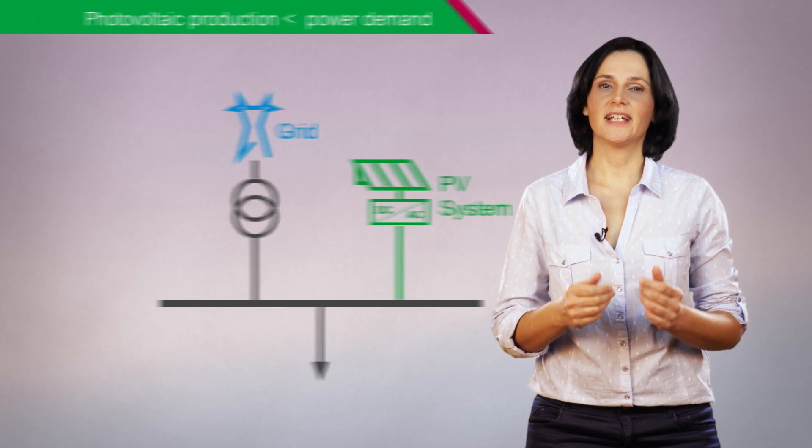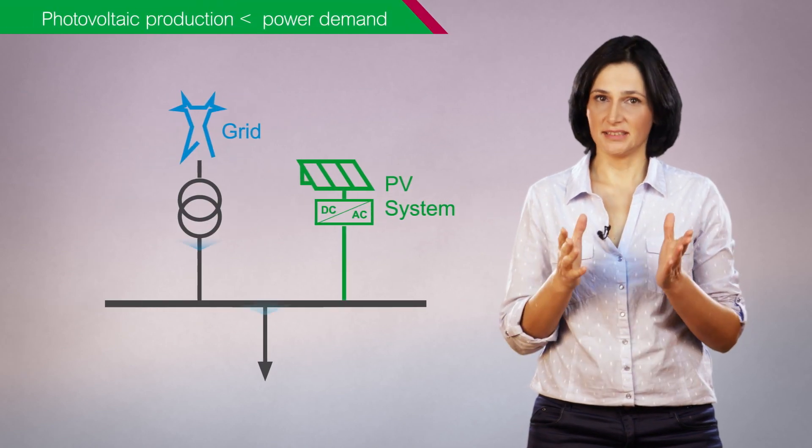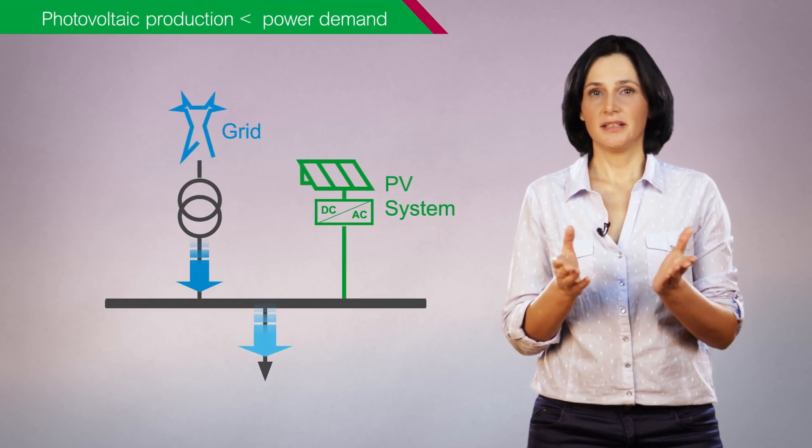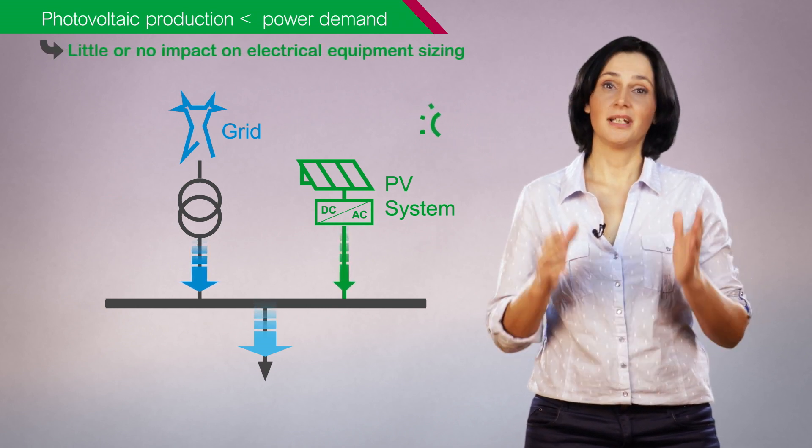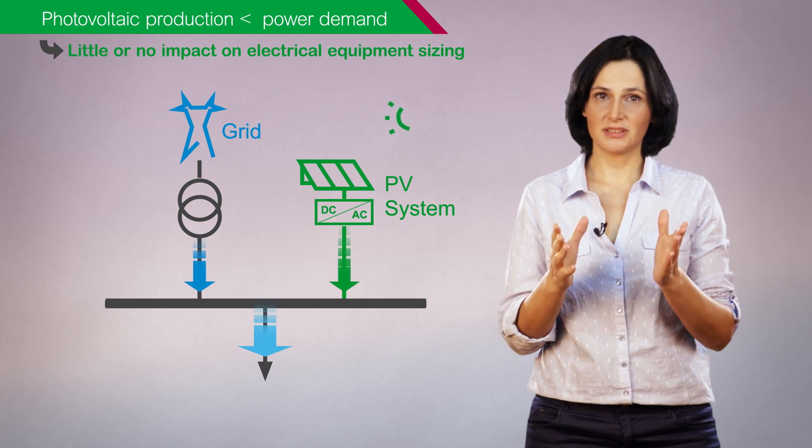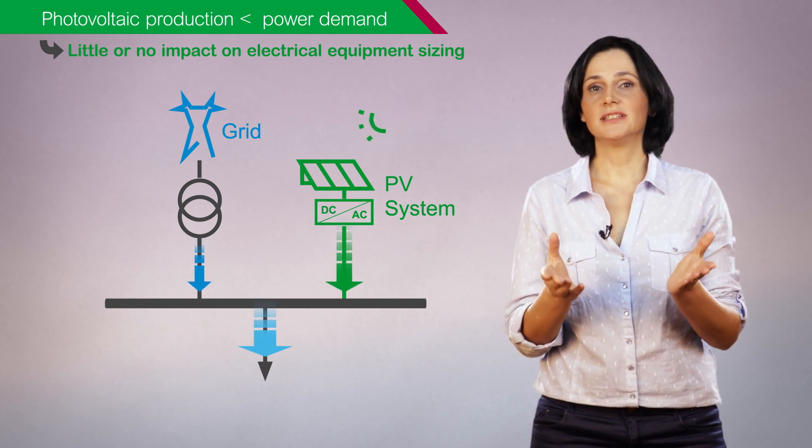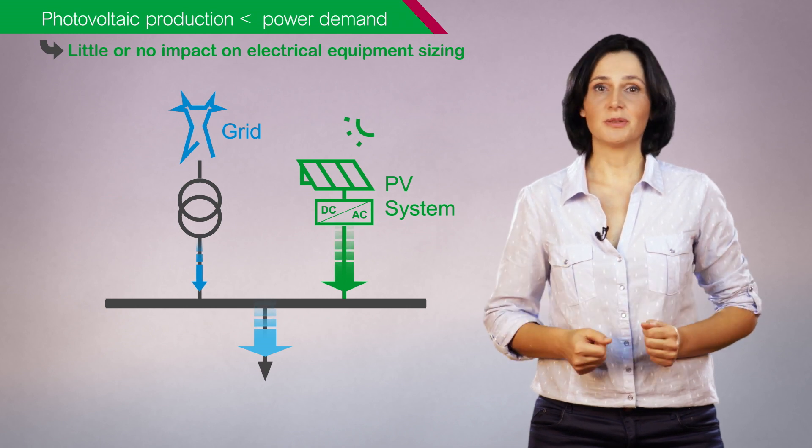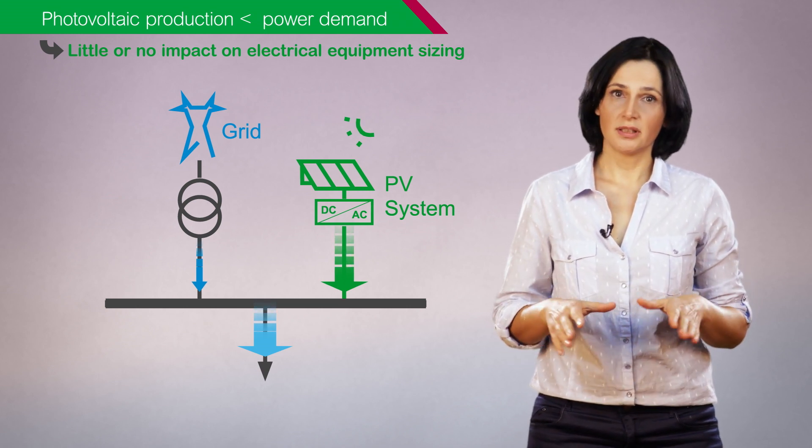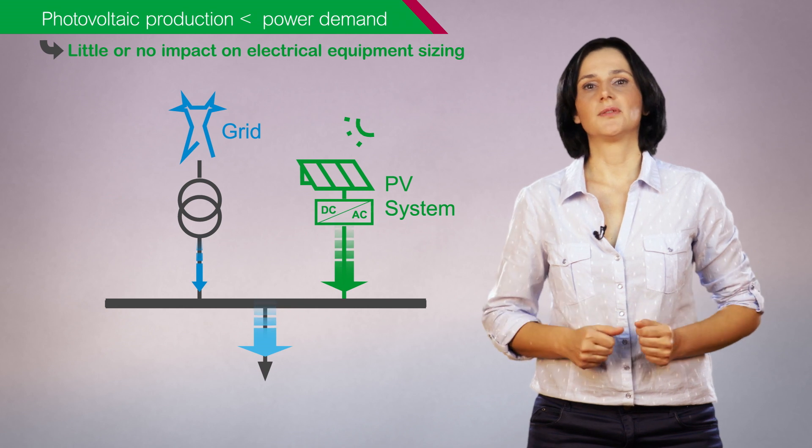When the photovoltaic production capacity is lower than the power demand, there is little or no impact on the electrical installation sizing. The current flow through cables and busbar does not increase when adding photovoltaic production. The transformer power flow is lower due to the contribution of the photovoltaic system.